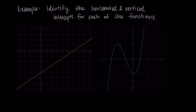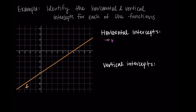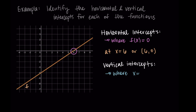Let's try these concepts out with some examples — identifying horizontal and vertical intercepts using the graphs of functions. We'll look at a linear function first. For the horizontal intercept, we look at where the output is zero. You could write x = 6, or (6, 0). Then for the vertical intercept, this is where x = 0, and I can see the line intersects at y = -4. So I could write y = -4, or the point (0, -4). With graphs, we just find where the function crosses each axis and label appropriately.